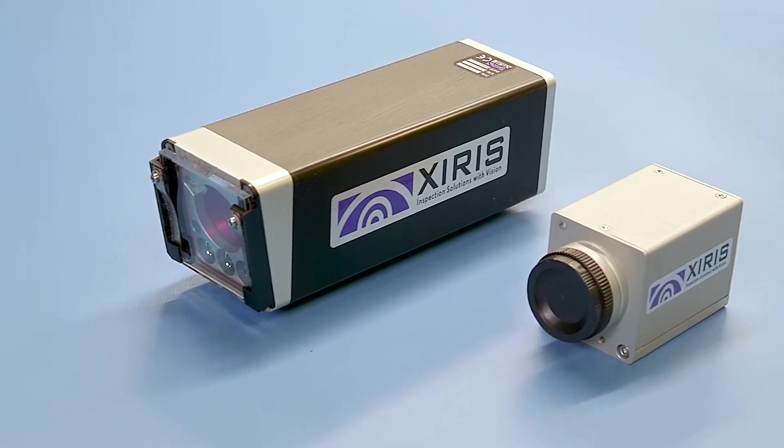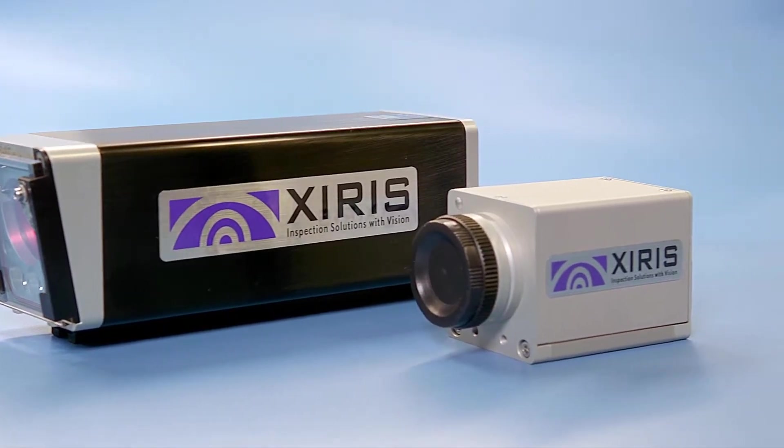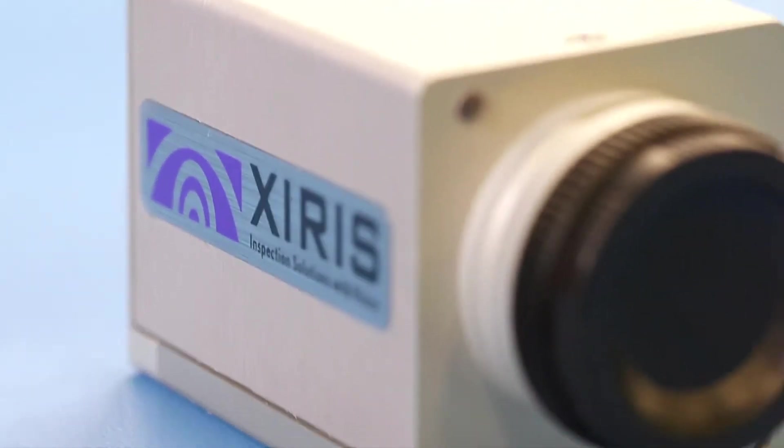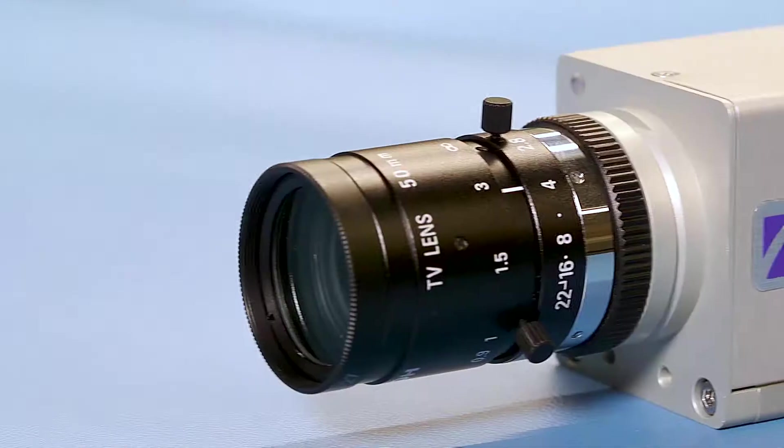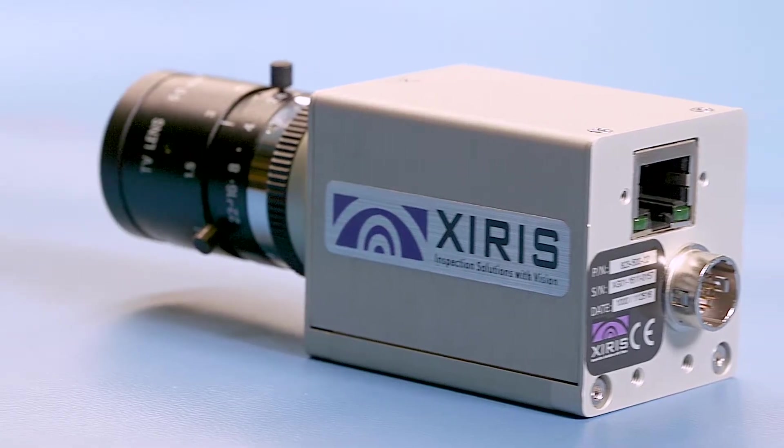This is the XVC-1000E and the XVC-1000 weld camera. The XVC-1000 is our flagship camera. Designed for machine builders and OEMs, it is packaged in a small format housing that can easily be integrated into a custom machine design where the OEM wants to take over the complete integration of the camera into their equipment.